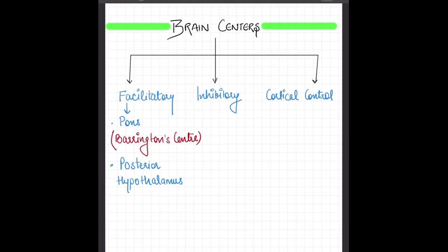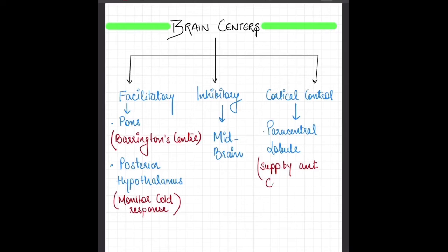As you all know that hypothalamus is responsible for the regulation of temperature. When there is a cold environment, the posterior hypothalamus facilitates the urination. The inhibitory center is located in the midbrain. And the cortical control is over the paracentral lobule, which is supplied by anterior cerebral artery. If there is an embolus over the artery or ischemia over the paracentral lobule, then it leads to urinary incontinence.